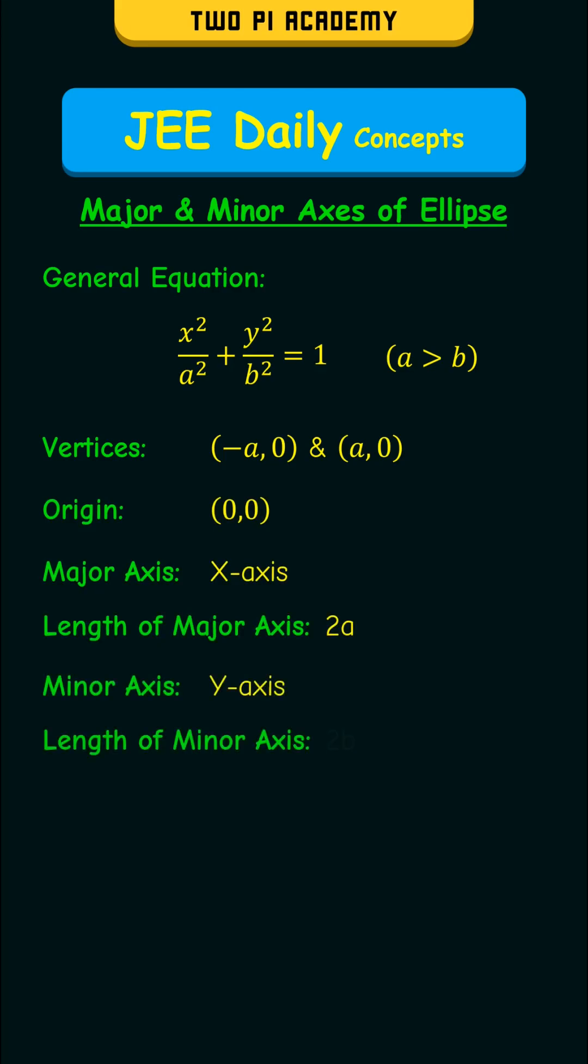The minor axis is the y-axis with length 2b. When a is less than b, the vertices are 0,b and 0,–b respectively. The origin is the same and the major and minor axis get interchanged.